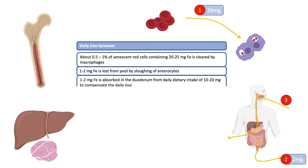This loss needs to be balanced by absorption of 1 to 2 mg of iron daily in the duodenum. The bioavailability of iron is only about 10%, and therefore the daily dietary requirement of iron is recommended at about 10 to 20 mg. For females, a larger intake would be required to replace menstrual blood loss.